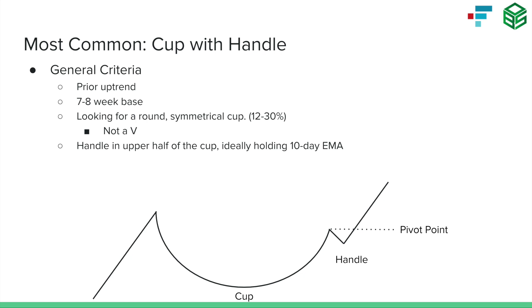We want to see a true shakeout — a truly deep base with some level of deep selling capitulation. So 12 to 30 percent is a good ballpark for the depth of the cup. A cup that's less than 12 percent probably isn't going to be a seven to eight week base and won't show that true shakeout.